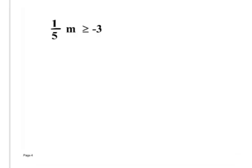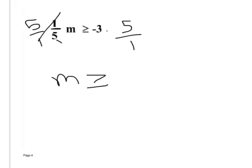Write this down. One-fifth times M is greater than or equal to negative three. I want to get rid of one-fifth, so I multiply by the reciprocal, five over one. They cancel — my M. Do I change the sign? No, I am not multiplying by a negative number, so I leave the sign. I take negative three times five, which is negative 15.